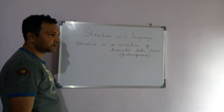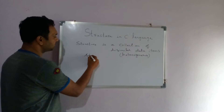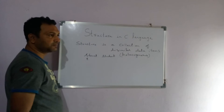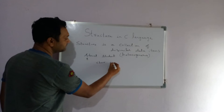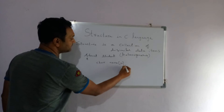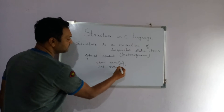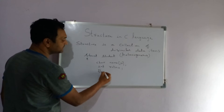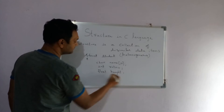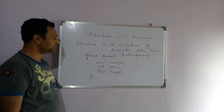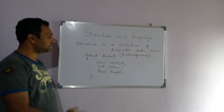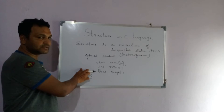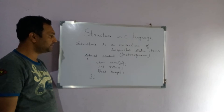How do you define a structure? Let us talk about a simple structure. Struct student — the attributes of a student are: name, roll number, and height. So a structure consists of a name, which is a character array; a roll number, which is an integer data type; and height, which is a float data type. This is how we define a structure.